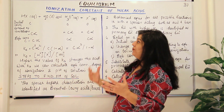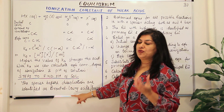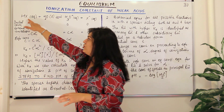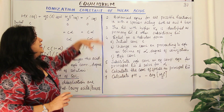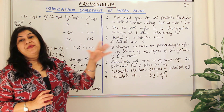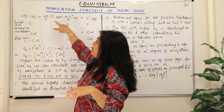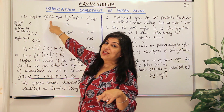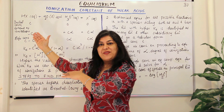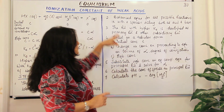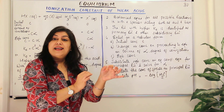The first step is to identify the acidic and basic species. Use the Brønsted–Lowry definition: a proton donor is an acid, a proton acceptor is a base. The second step is to write balanced equations for all possible reactions, including the reaction of water with itself, since water acts as a base in one reaction and as an acid in the other.